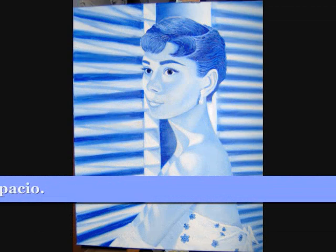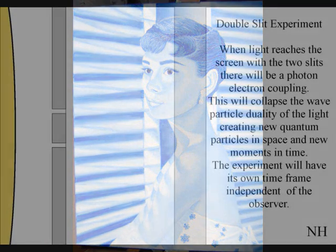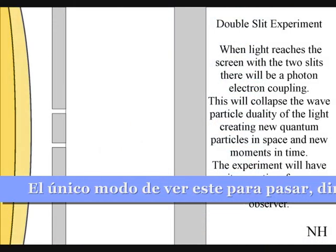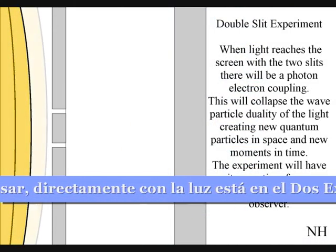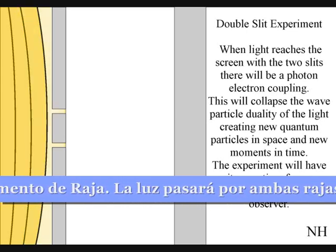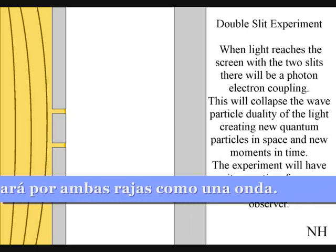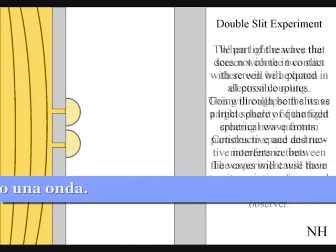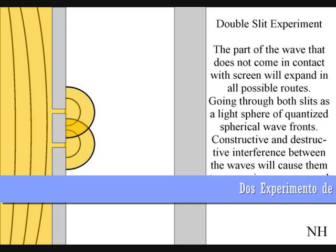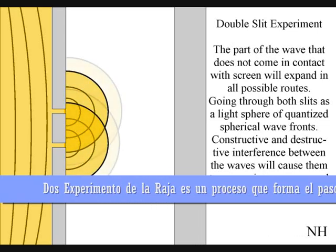The only way to see this happen directly by light is in the two-slit experiment. When the waves reach the screen with the two slits, they will react with the electrons of the screen. This will collapse the wave-particle duality of the light, creating new quantum particles in space and new moments in time. The part of the wave that does not come in contact with the screen will expand in all possible routes, going through both slits as two wave fronts.